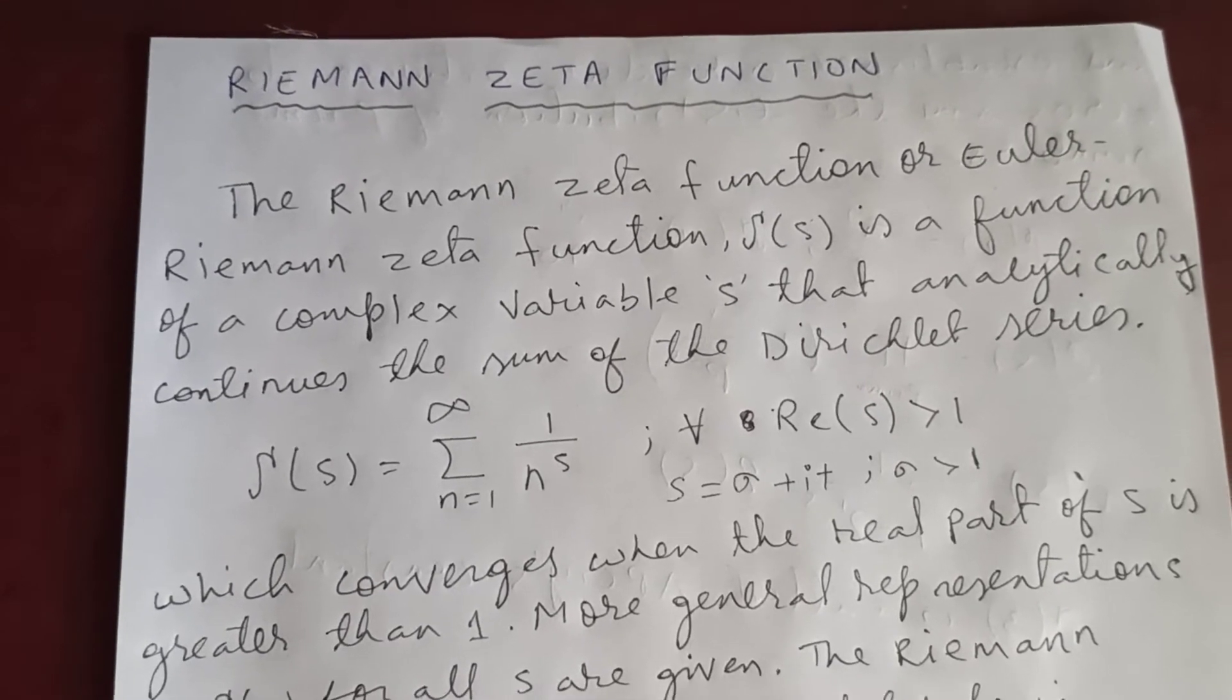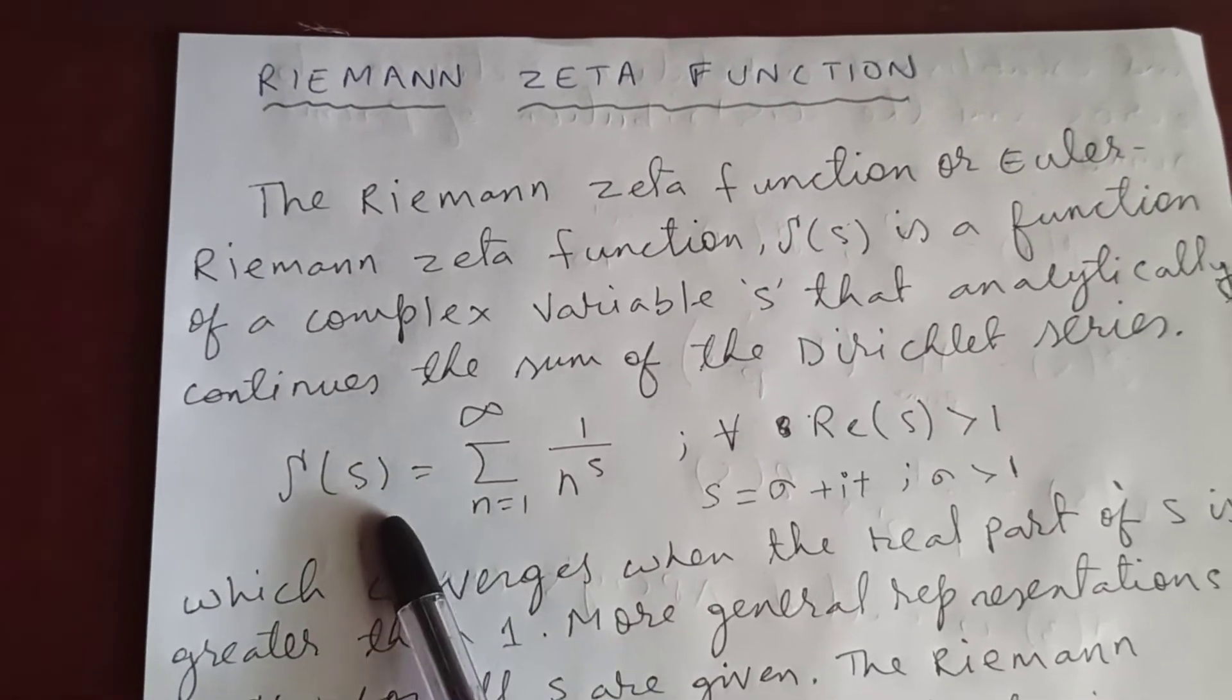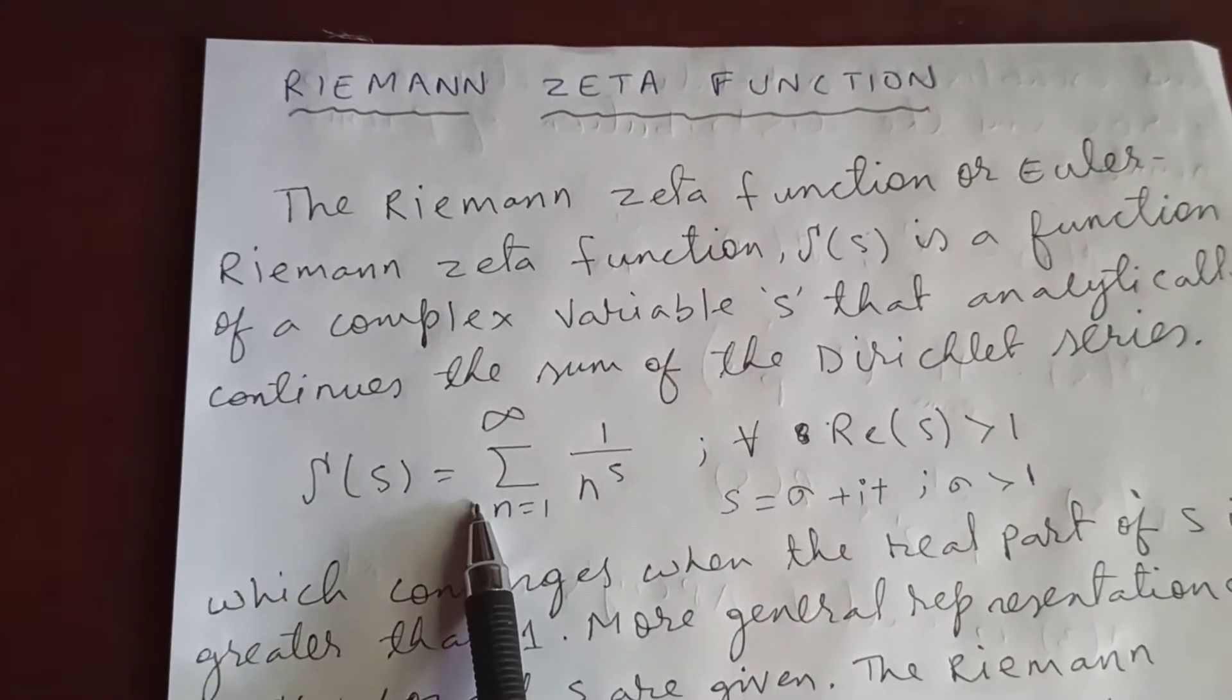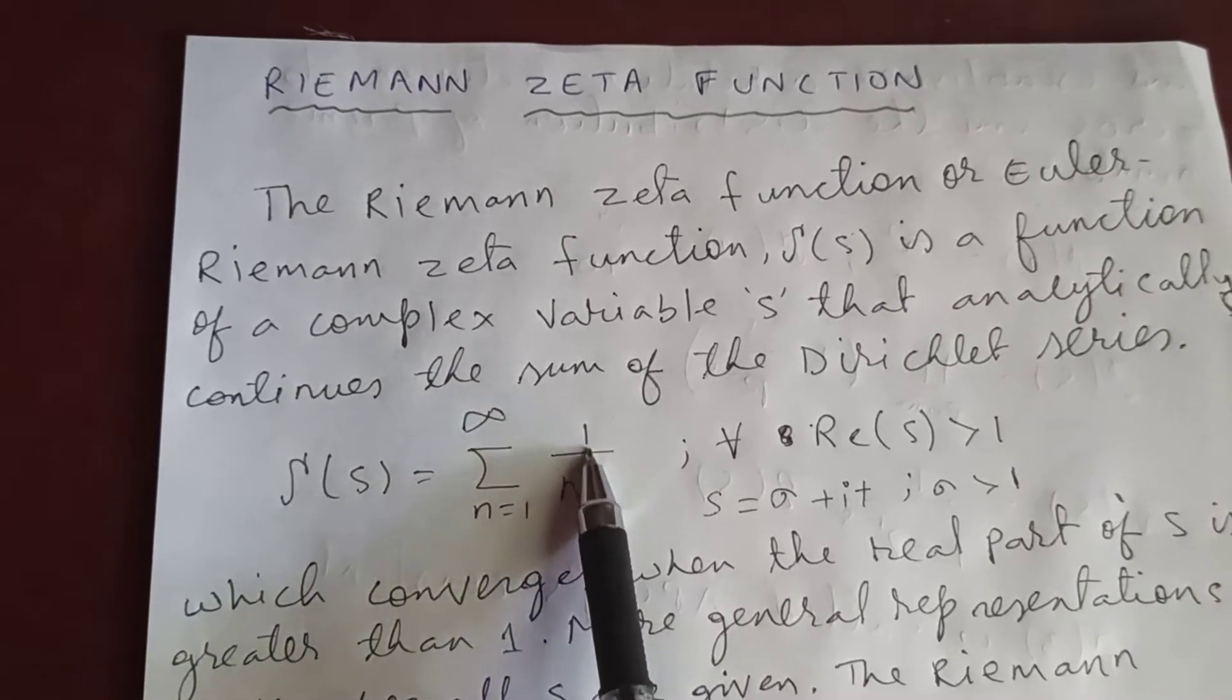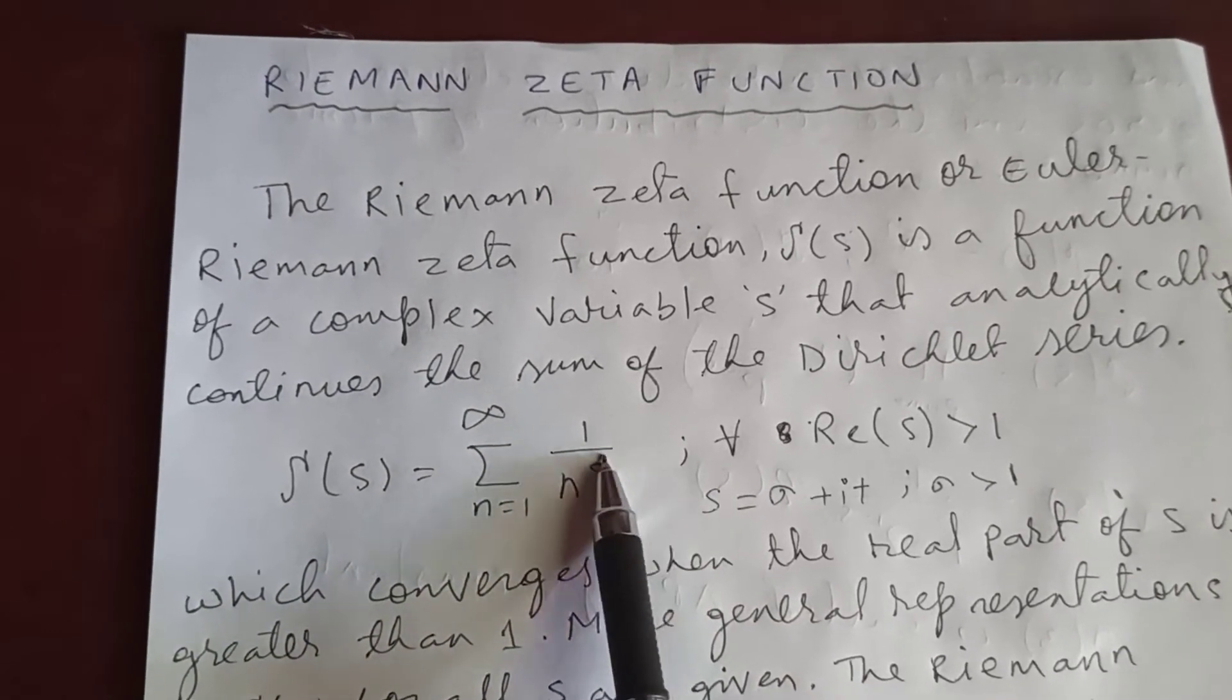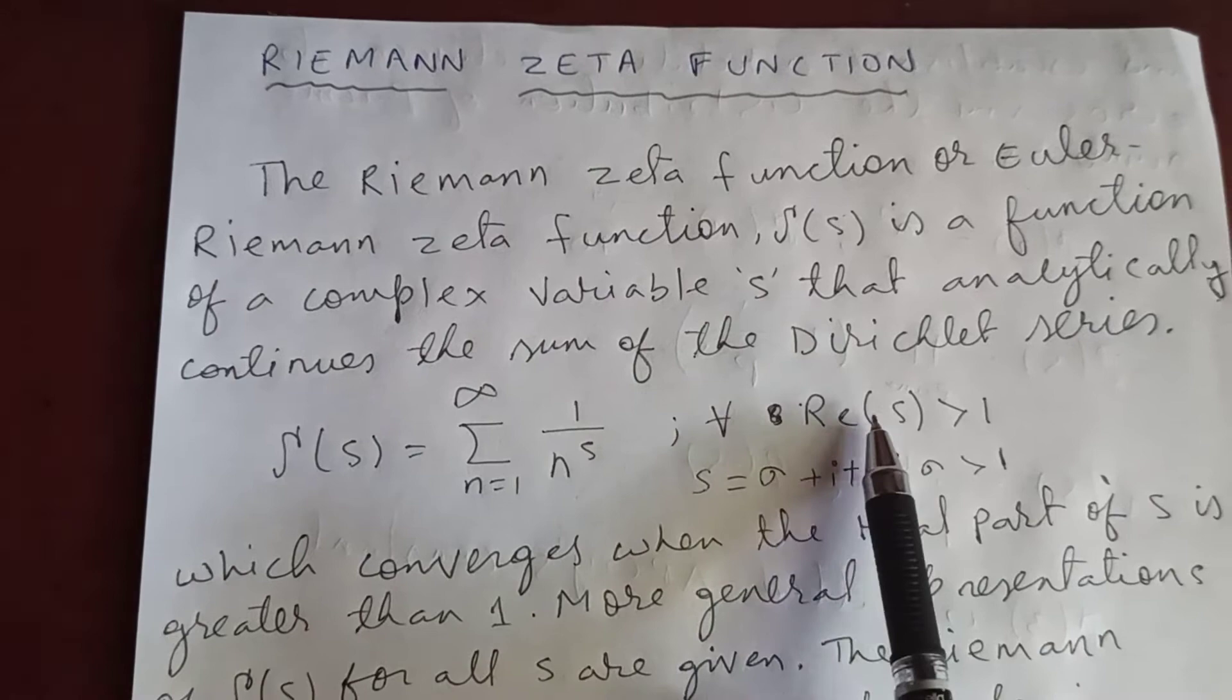Definition: zeta of s is sum from n equal to 1 to infinity 1 over n to the s. And here you have to know that the real part of s is greater than 1.